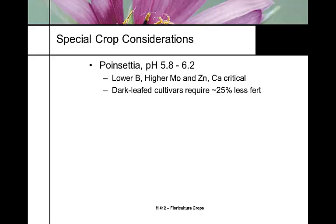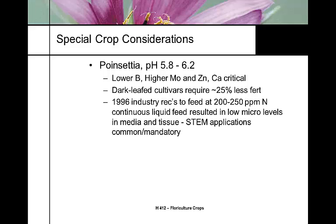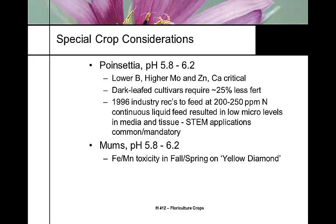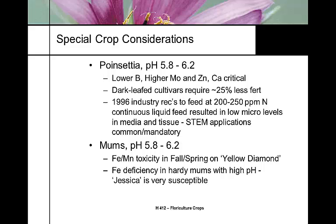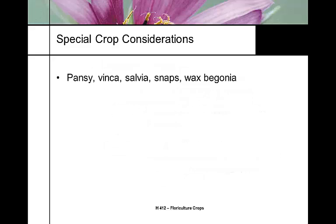Poinsettias also have dark leaf and green leaf varieties requiring different fertilizer programs — dark leaf varieties require less fertilizer, so they need separate feeds or quality will differ. Chrysanthemums have the same pH range, but iron and manganese toxicity is common, so you won't put them on the same feed as crops requiring higher iron and manganese, like azaleas. It's also very species- and cultivar-specific — there are hundreds of mum cultivars.